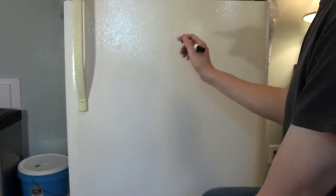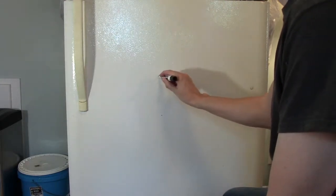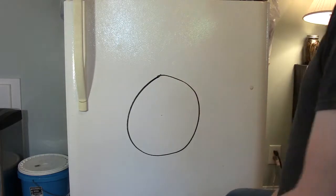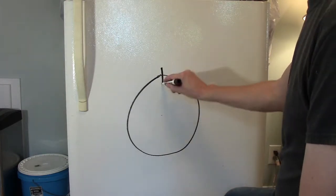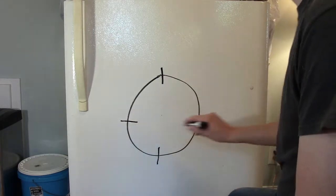The circle of fifths explained. Let's start by drawing a circle. Not too bad. We'll need four tick marks now. A north, a south, east, and a west.